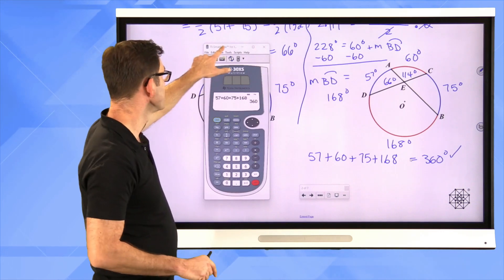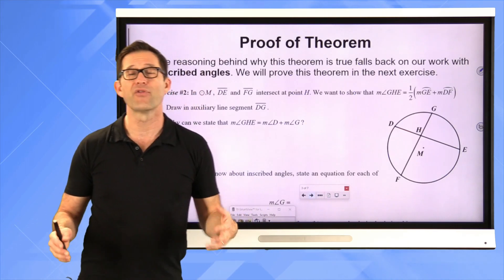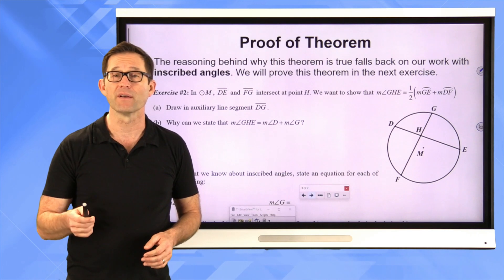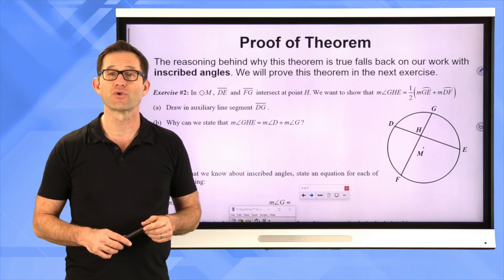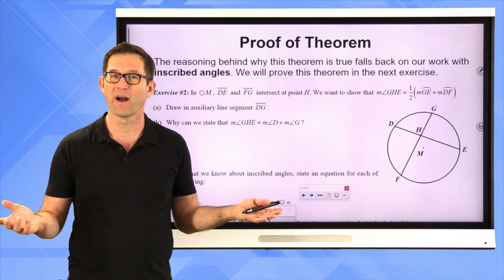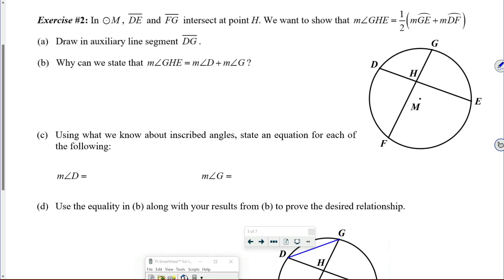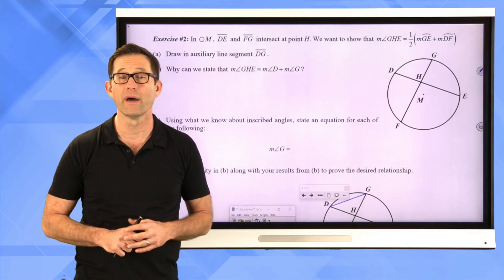As always in geometry, we don't want a theorem without proving it. The reasoning behind why this theorem is true falls back on our work with inscribed angles. We will prove this theorem in exercise number two. In circle M, segment DE and segment FG intersect at point H. We want to show that the measure of angle GHE is one half the sum of arc GE and arc DF. Letter A: draw in auxiliary line segment DG.